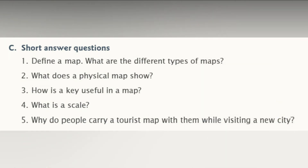Next are short answer questions. Define a map. What are the different types of maps? A map is a drawing of the earth or a part of it on a flat surface such as paper. Different types of maps are physical map, political map, tourist map, thematic map, and weather map.